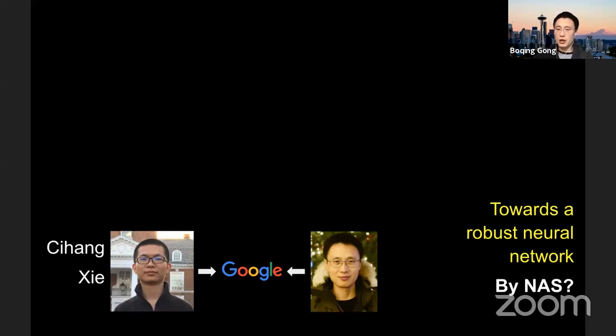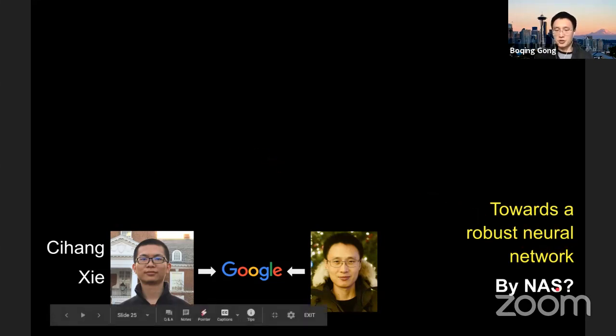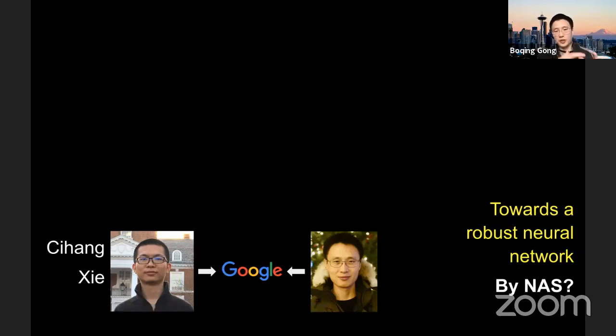So naturally, we started to think, can we try to build a robust neural network by neural architecture search? So all the existing models, neural networks, we know they are not very robust. Can we, therefore, try to design a new search space? Maybe try to search a different neural network? Maybe it will be more robust than the existing neural networks. We started to work on this.